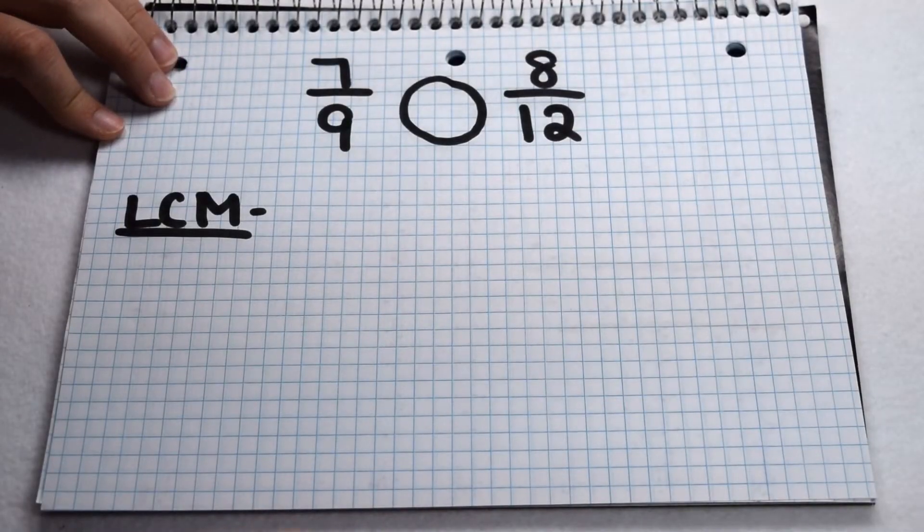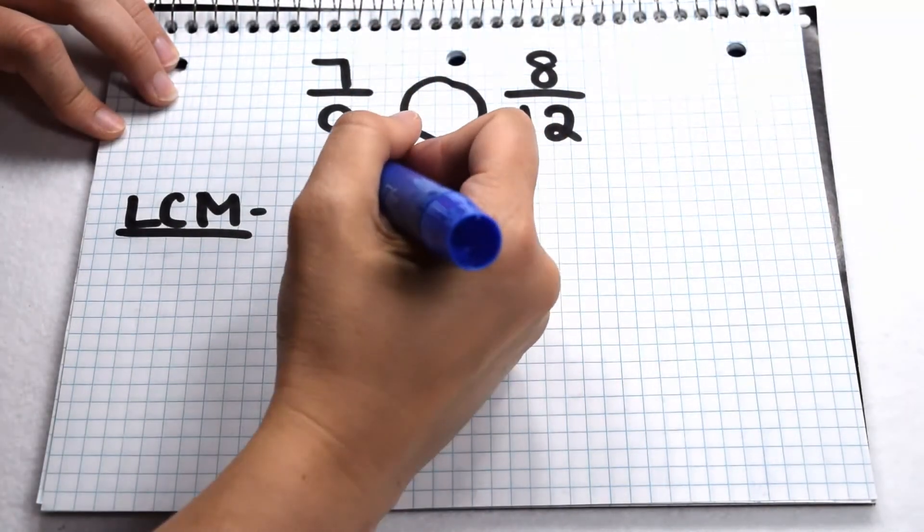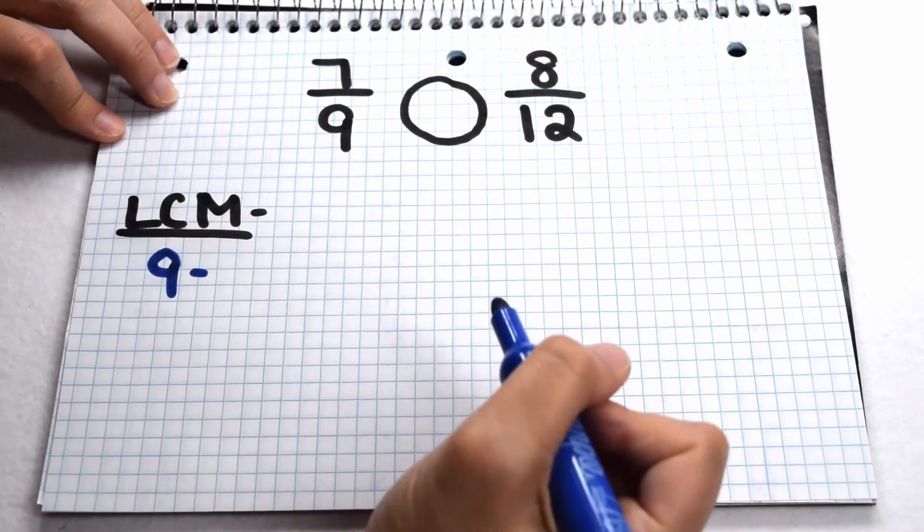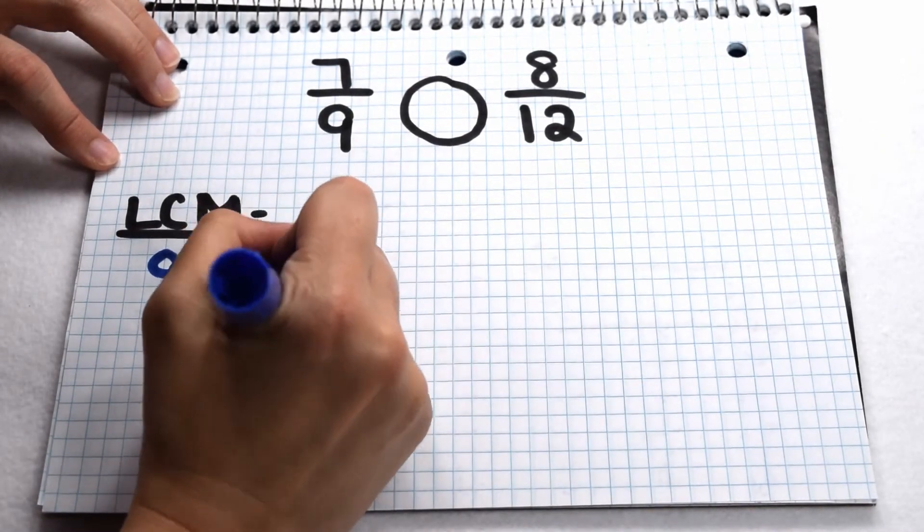Let's try another example on paper where we don't have manipulatives to refer back to. To do so, we need to make equivalent fractions using a common denominator of 9 and 12, so we need to start out by finding the least common multiple of 9 and 12.